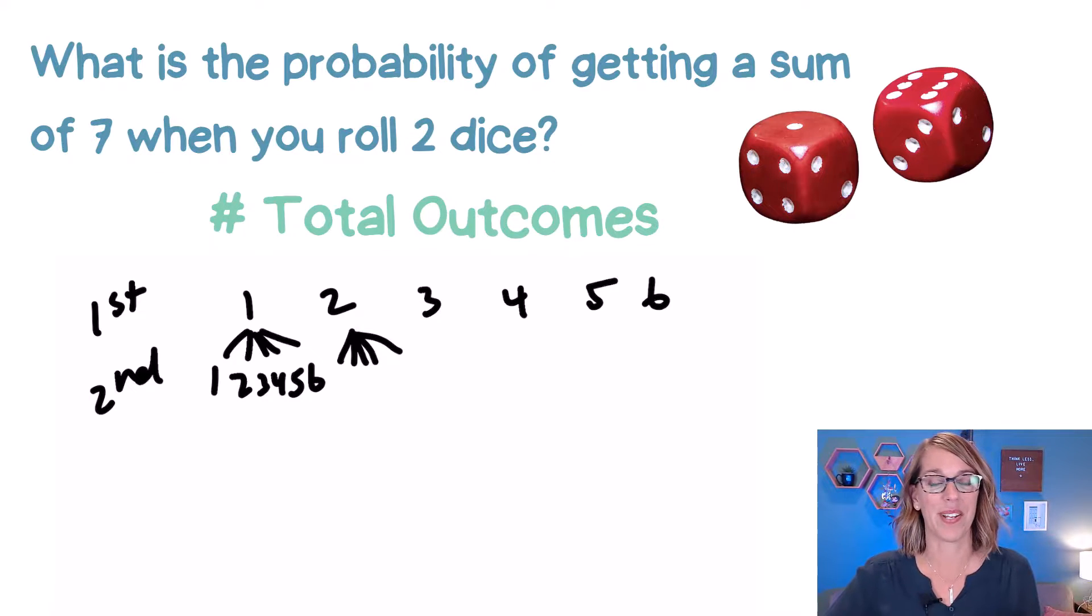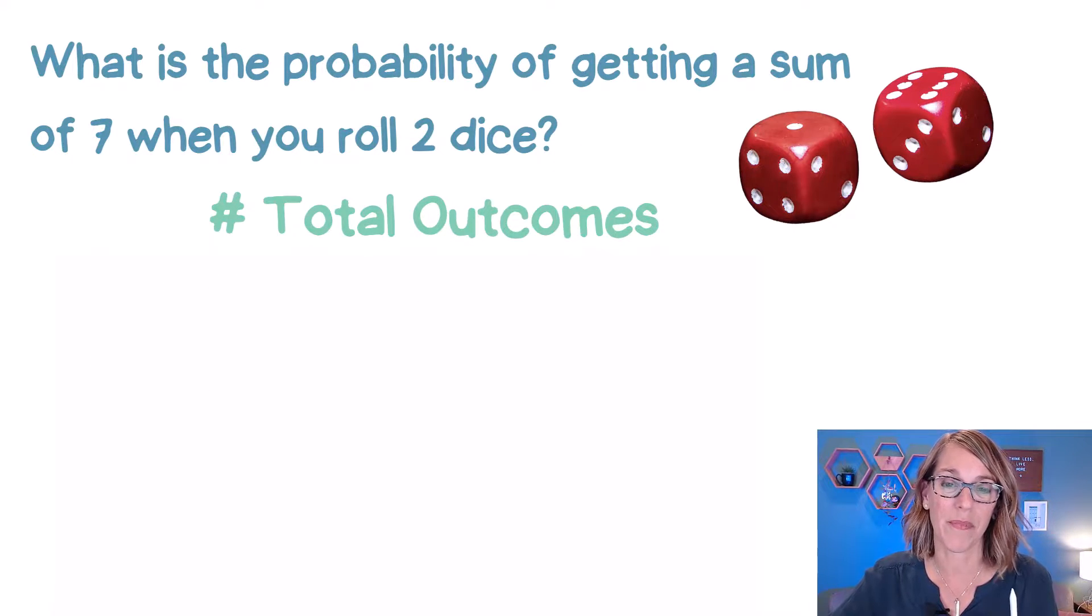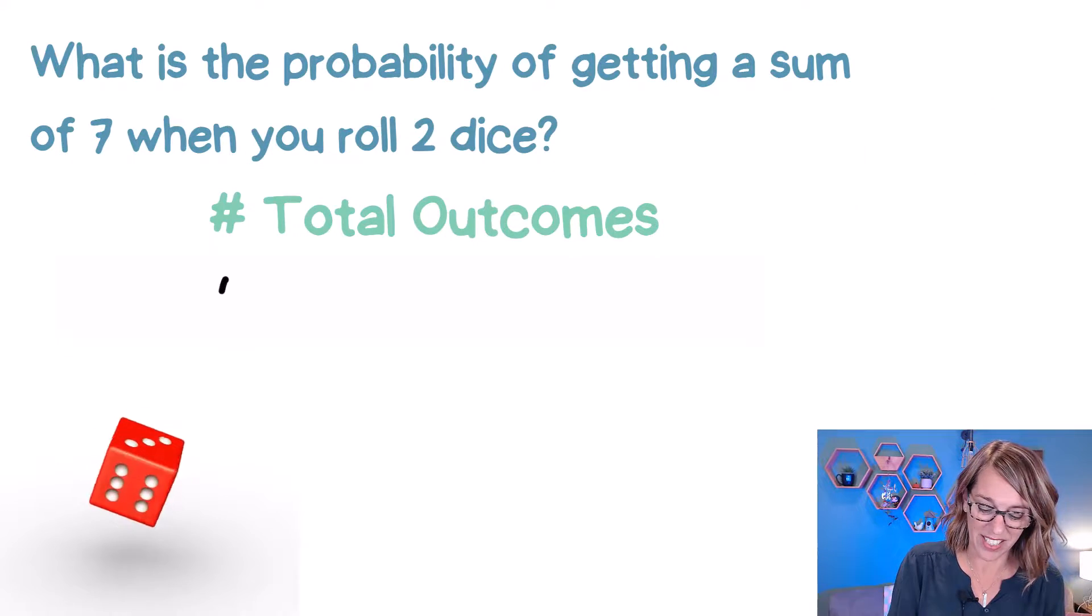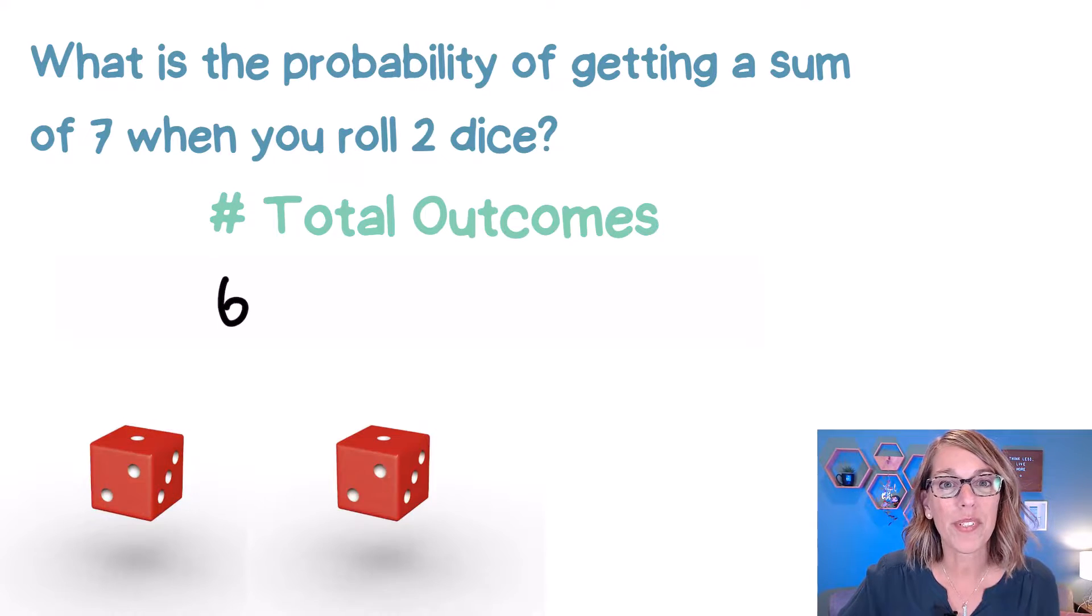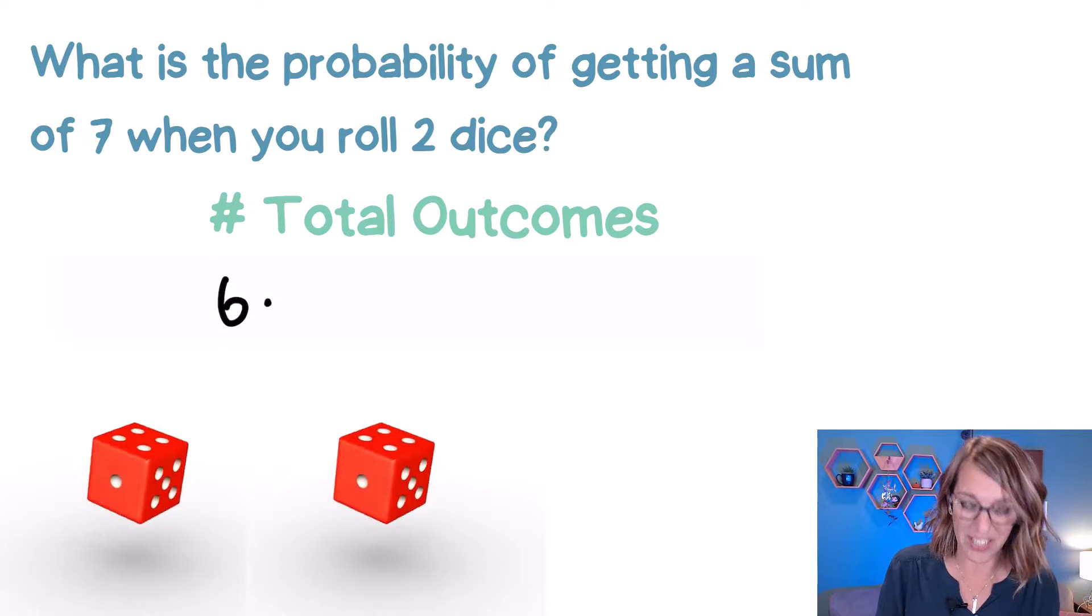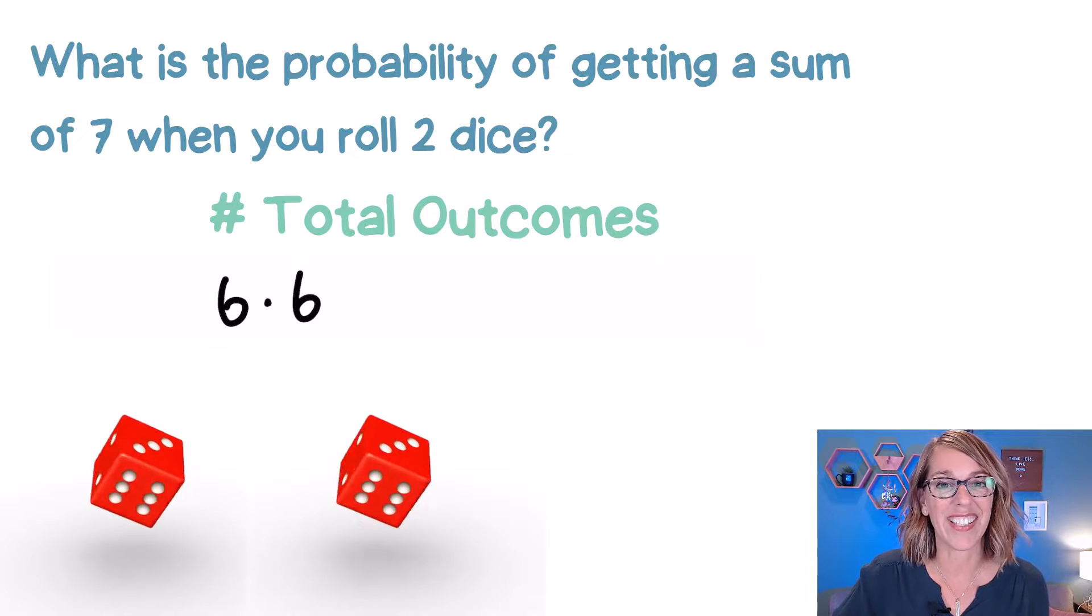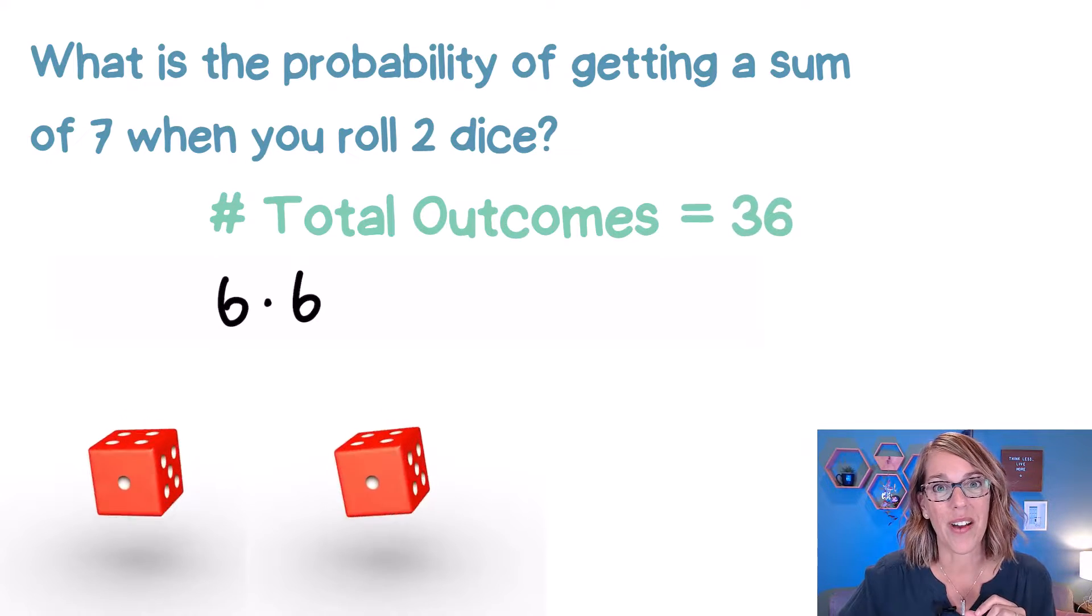Well this is a little bit cumbersome, so instead we can use our multiplication principle where we're going to take the number of ways that we can get on that first dice, which would be a six, and then multiply that by the number of ways that we can roll that second dice, which is another six, giving us a number of total outcomes of 36.